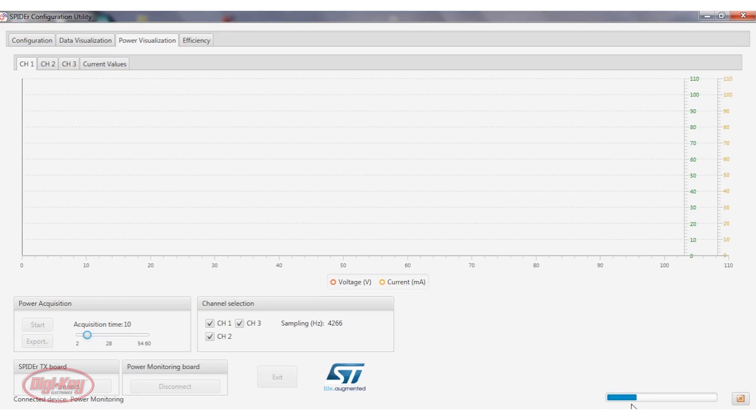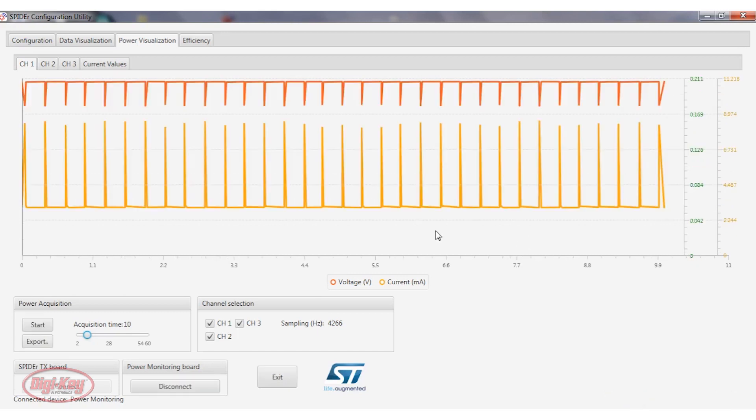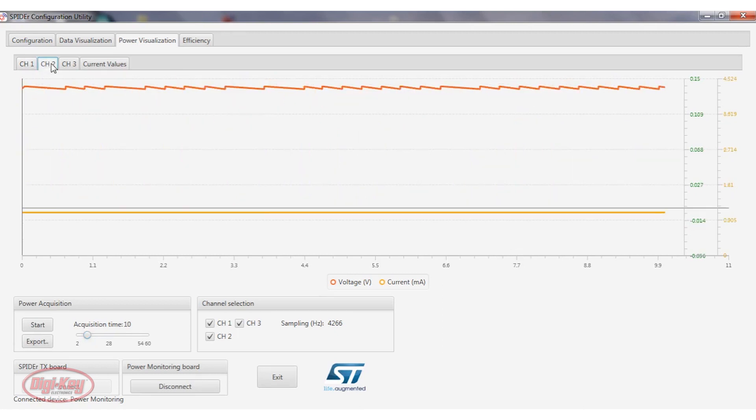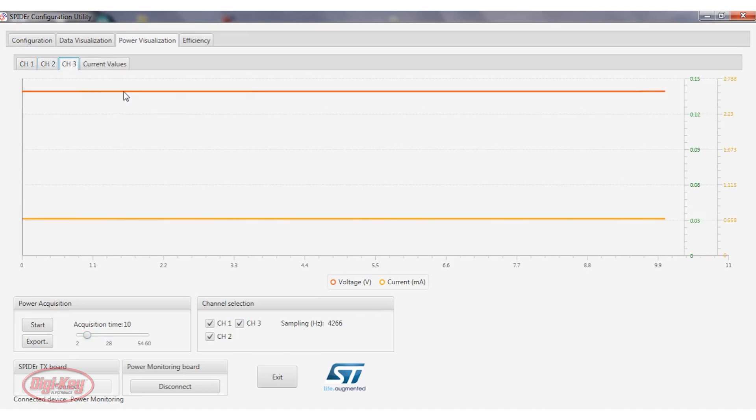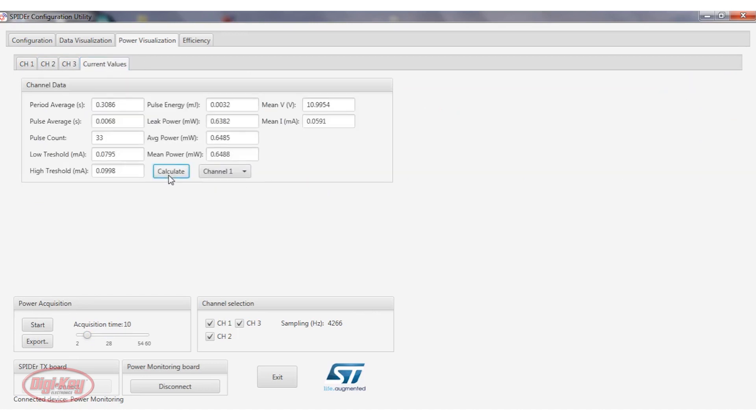Over here, we can see that it's gathering data. And this is channel 1. If you hold your mouse on here, it displays the information. So the voltage mean is almost 11 volts. Channel 2 is 4.3 volts. And then channel 3, again, is the light sensor. And then we can go to current values, click on calculate, and then you can select the various channels here.